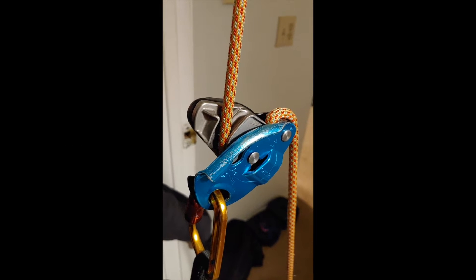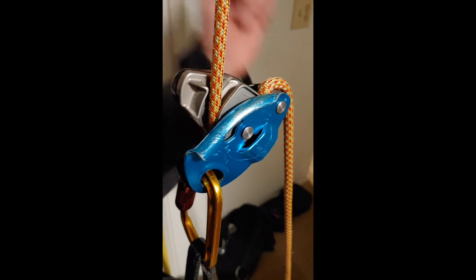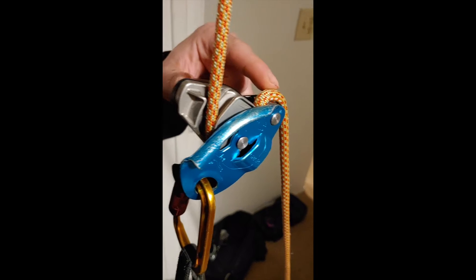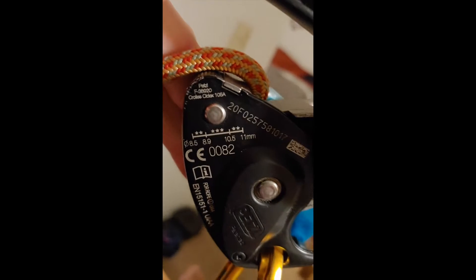Okay, this is the Grigri 3, the newest Grigri 2019 version. This is an 8mm rope, which is technically thinner than the rating.